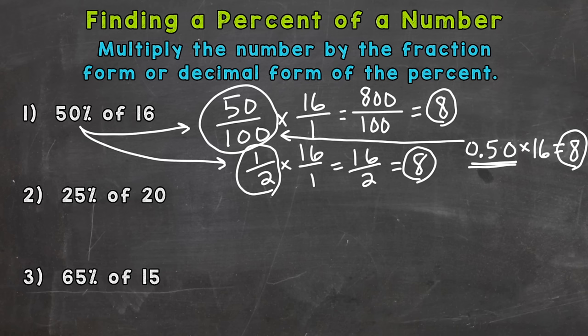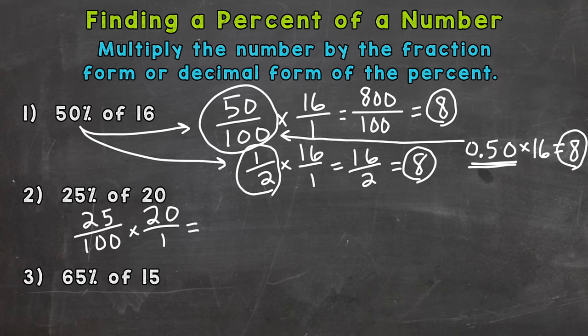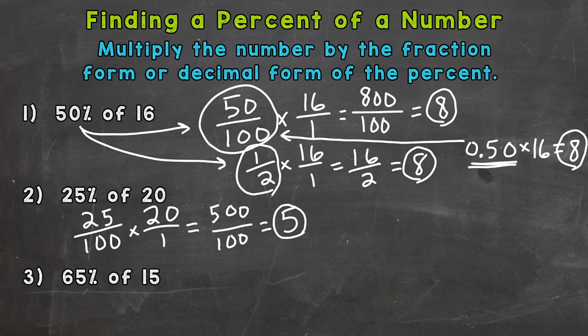Let's look at number 2: 25 percent of 20. We'll do the fractional form first. Remember, a percent means per 100 or out of 100, so 25 over 100 times 20. 25 times 20 gives us 500, and 100 times 1 is 100, so we get 500 divided by 100, which equals 5. So 25 percent of 20 is 5.